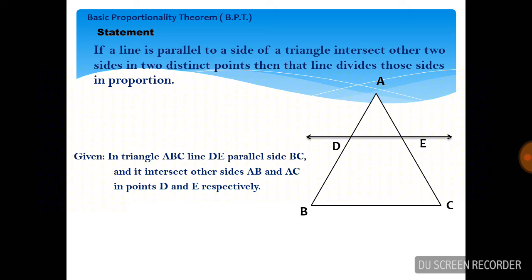The 'then' part: the line divides those sides in proportion. Line DE divides side AB into two parts — AD and DB — and divides side AC into two parts — AE and EC. These four parts are in proportion. To prove: AD upon DB equals AE upon EC.